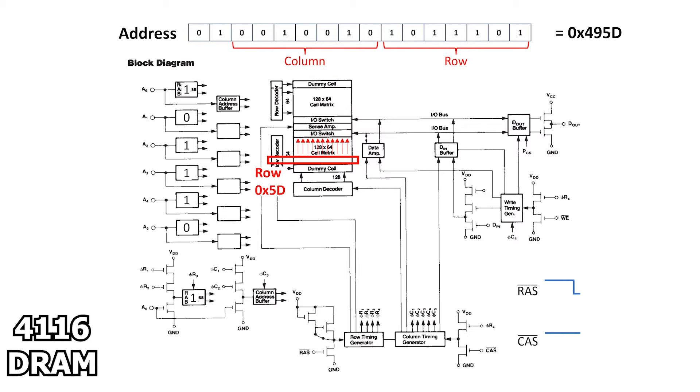A short time later, the column address from the Z80 is presented on the 7 external address pins, which is 12 hexadecimal in this case. The column address strobe, or CAS, is asserted, and the data is latched into the column address buffer. The DRAM chip now has the entire 14-bit address stored internally.